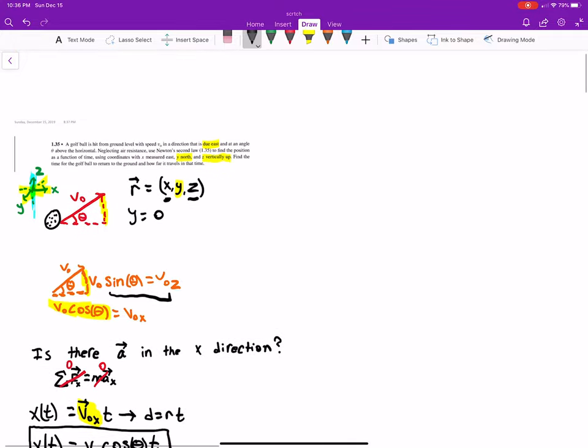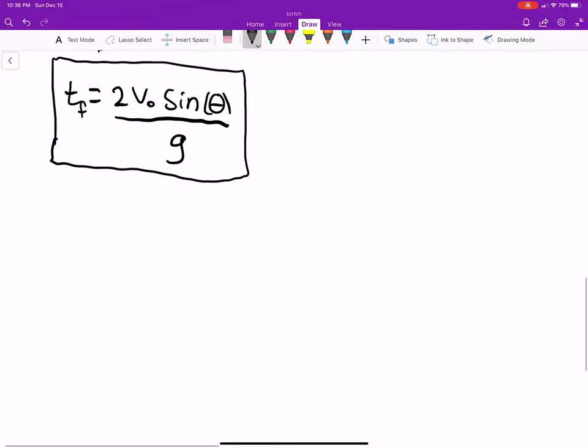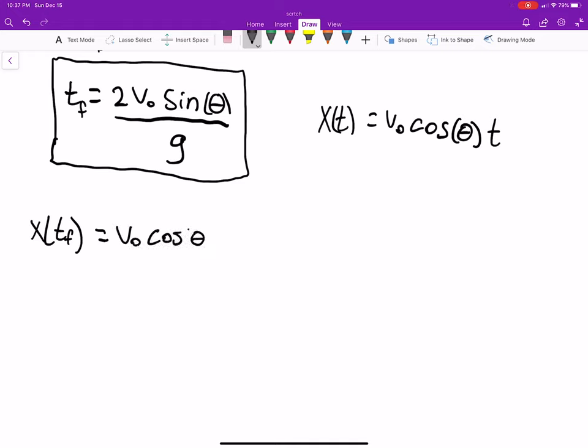Now that we have this, it asks how far did the ball go, how far did it travel? Well, z represents how high up it is, x represents how far east it goes. So to find that we do x as a function of t floor. Well, x as a function of time we said was just v naught cosine of theta times time. So the only difference here is we replace t with t floor, which t floor we said - v naught cosine theta - was just all of this stuff, so times two v naught sine of theta divided by g.